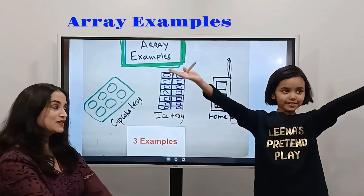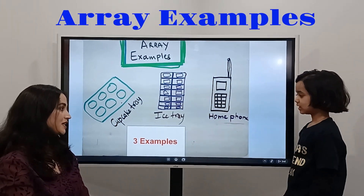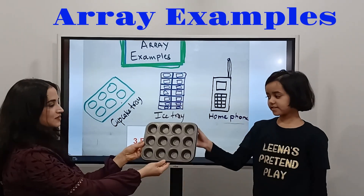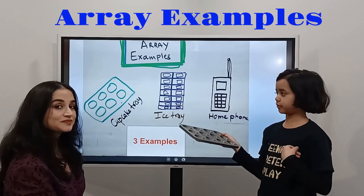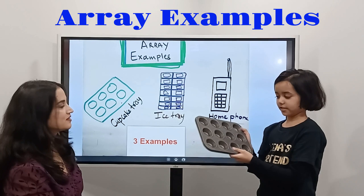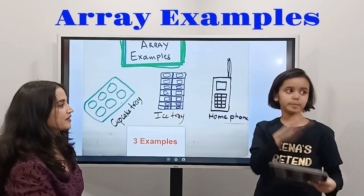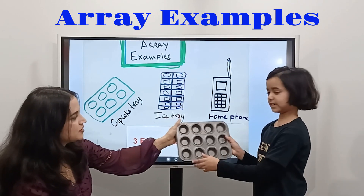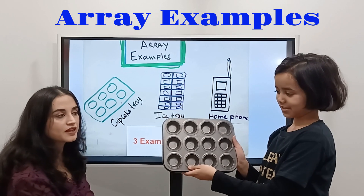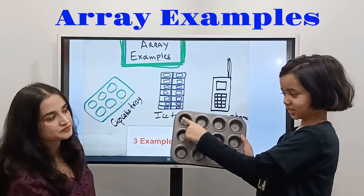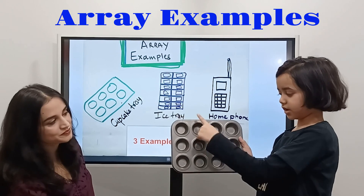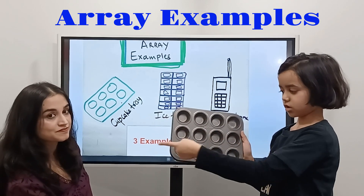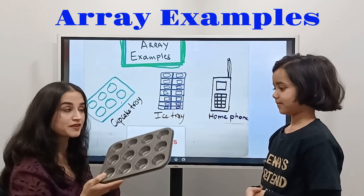Every example — what are the examples that we find in our house? Three examples. The first one is a cookie tray. Can you show the columns and rows in this one? So kids, this is column 1, column 2, column 3, column 4. And row 1, row 2, row 3. That's a good example of an array.